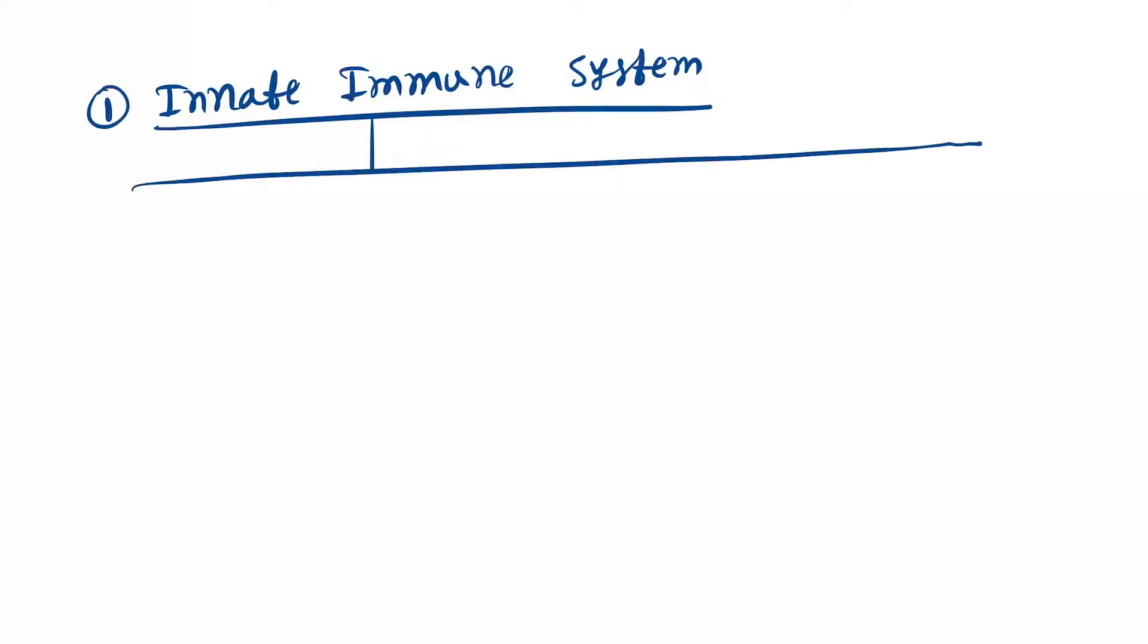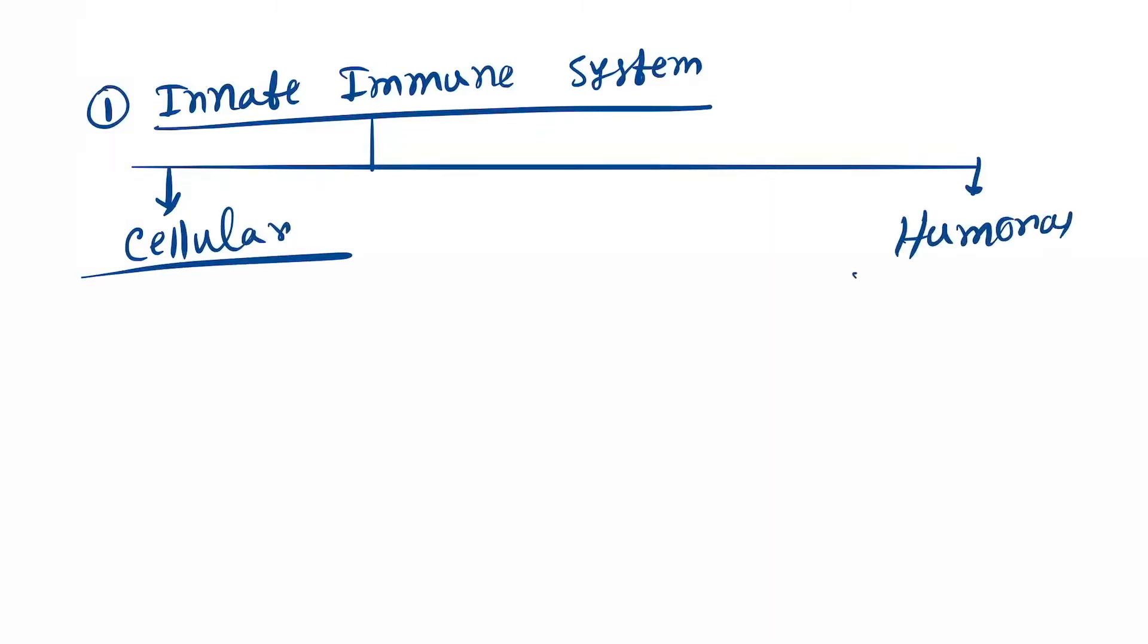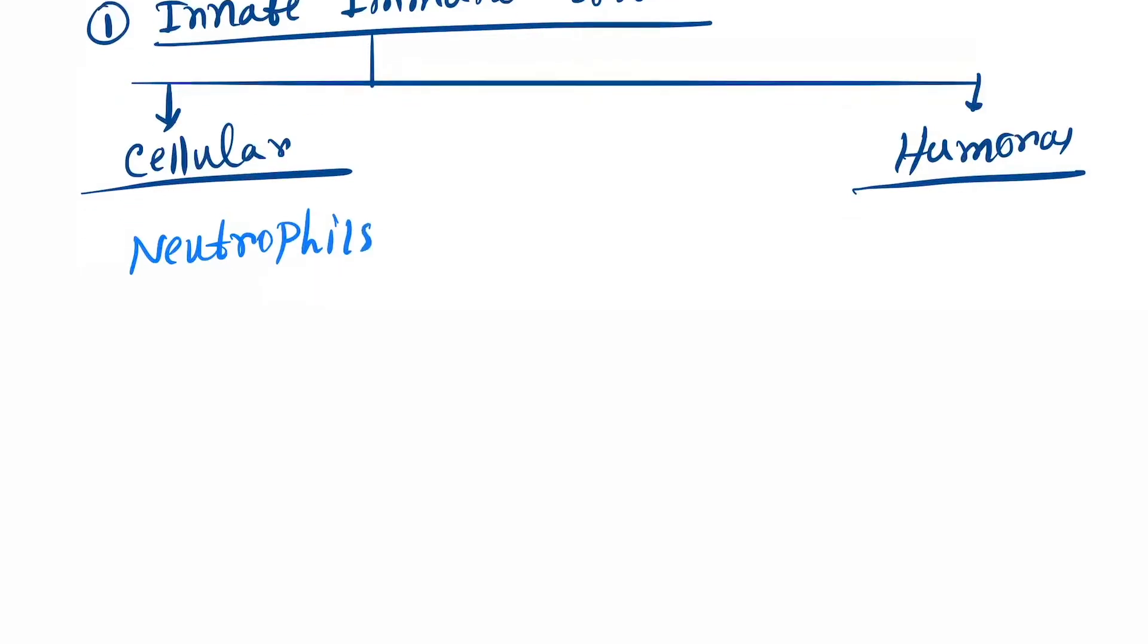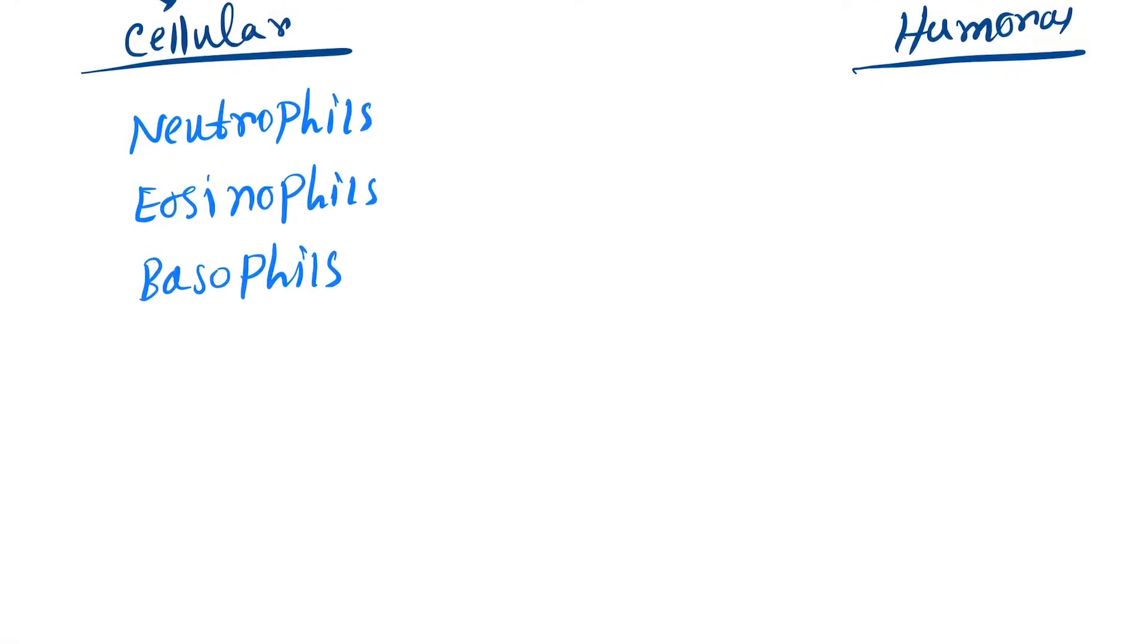In cellular, the cell organelles that work here are neutrophils, next is eosinophils, next is basophils, next is monocytes or macrophages.